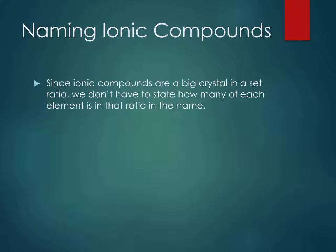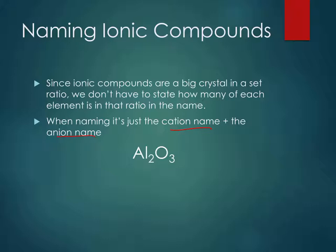So when we name them, we don't have to state how many of each element there are because they're in a fixed ratio, and we know what the charge of the ions are. The difference between ionic and covalent is ionic, we're able to always figure out what the ratio is because it's a fixed ratio. So for the name, we don't need to say how many of each are in it.